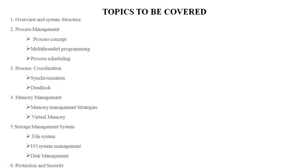After completing the course of operating system, the student will learn the following topics. First, overview and system structure, followed by process management, in which we cover process concept, multi-thread programming, and process scheduling. Then process coordination, where synchronization and deadlock topics will be discussed. Then memory management, where memory management strategies and virtual memory concepts will be discussed. Then storage management system, under this file management, IO system management, and disk management will be discussed. And lastly, protection and security.